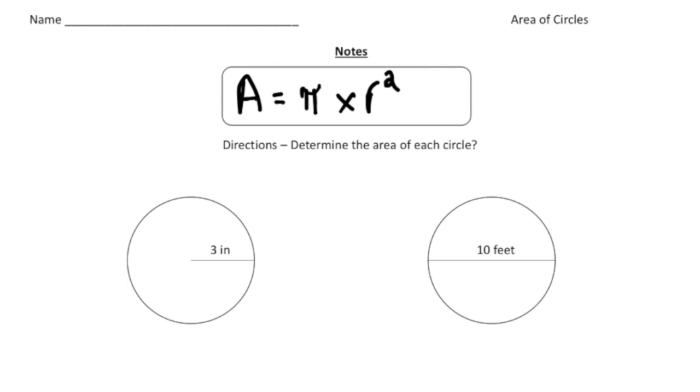Alright, so for this one we have the radius is 3 inches. So we have the value for r. So what I recommend you always do is write down the formula first. So area equals pi times radius squared.